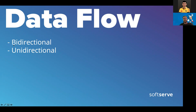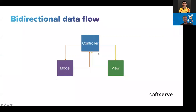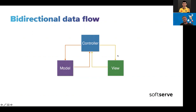The first one is bidirectional data flow. I think everybody is familiar with this. This diagram is not about MVC actually — it's about bidirectional data flow, which is when we have cross-reference between each layer. Each layer can communicate with each other. For example, the controller can communicate with the model, and the model has a callback to the controller, and the same thing applies to the view.